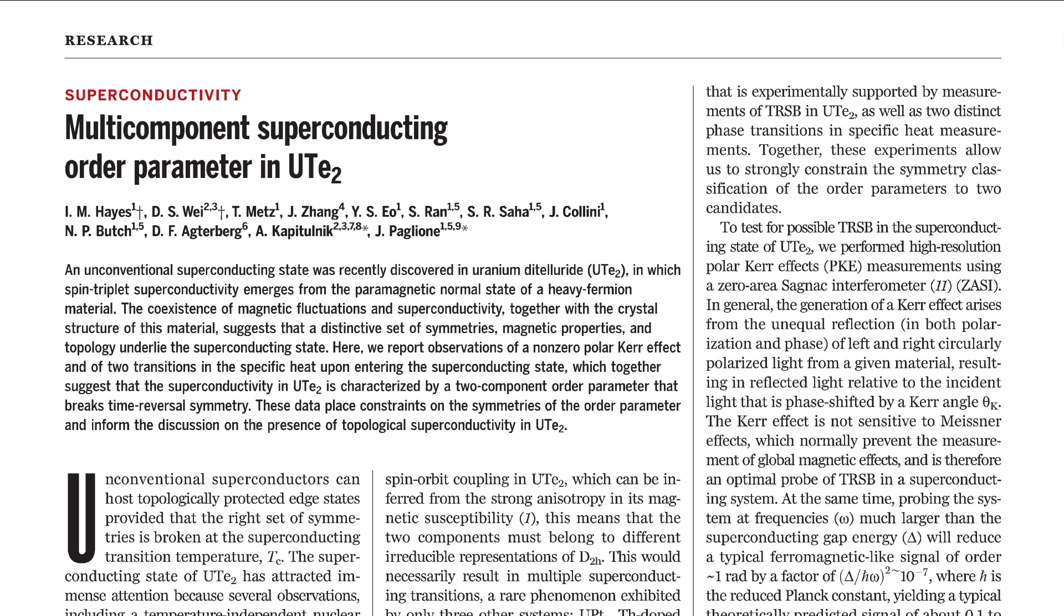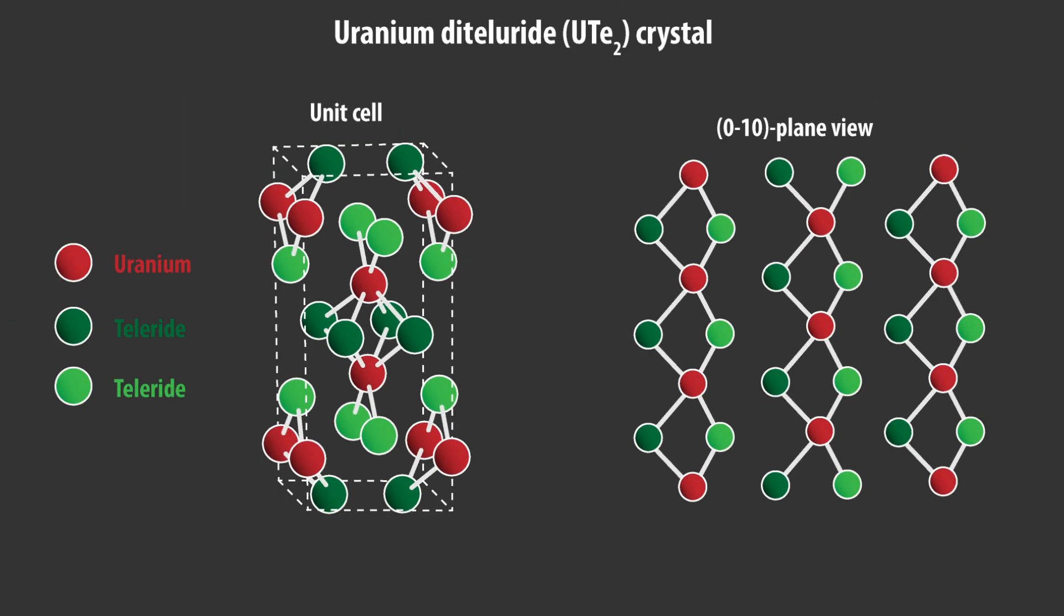So what was so interesting about these latest results? First, they found evidence that uranium ditelluride is a topological superconductor. While not completely conclusive yet, this could be one of the first confirmed topological superconductors. Secondly, they observed that the material became superconducting not once but twice.